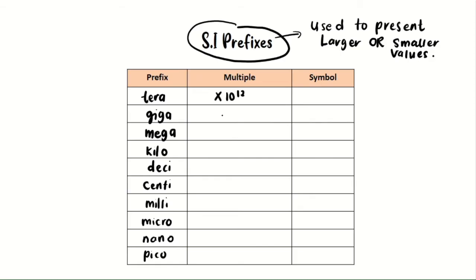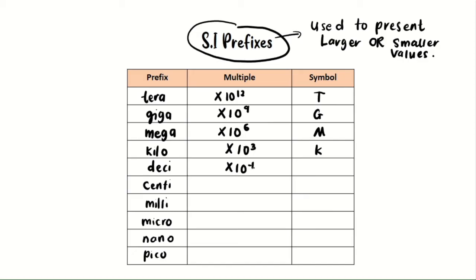Tera is 10 to the power of 12, expressed as capital T. Giga is 10 to the power of 9, expressed as capital G. Mega is 10 to the power of 6, expressed as capital M. Kilo is 10 to the power of 3, expressed as lowercase k.